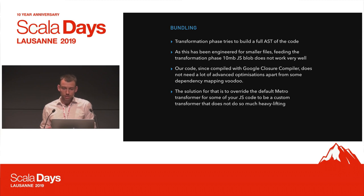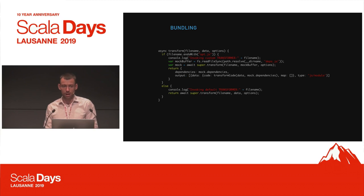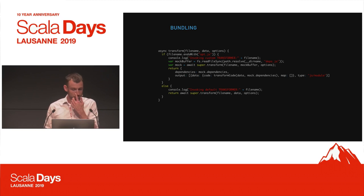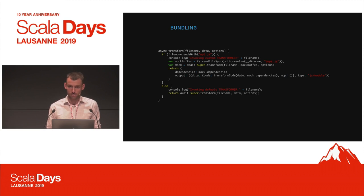So we wrote a custom transformer in the Metro bundling pipeline — which is really not all that complicated. What it does is look for the files output from Scala.js that have been optimized and just skip the transformation phase for them, delegating to the default transformer for all other files. One remaining problem was with source maps — debugging became quite hard, and this is something we're still working on.